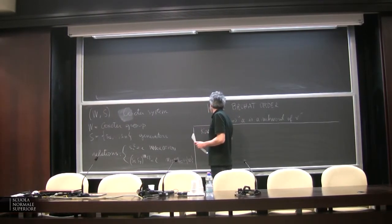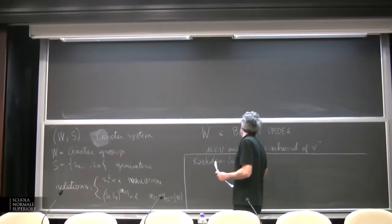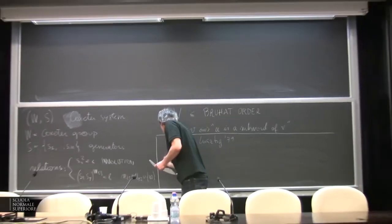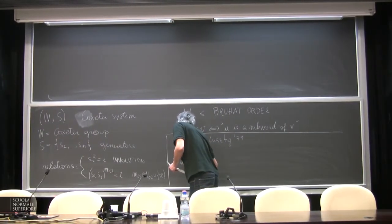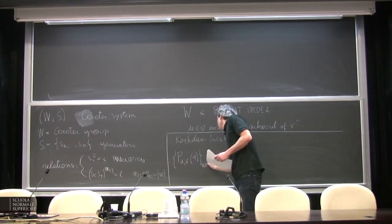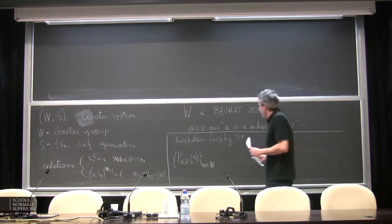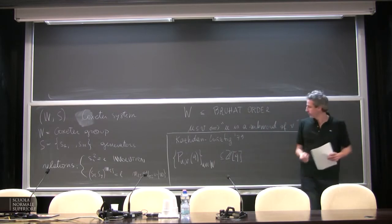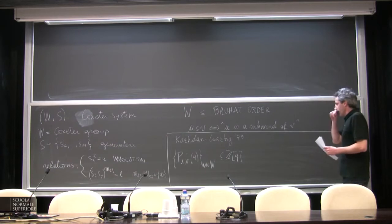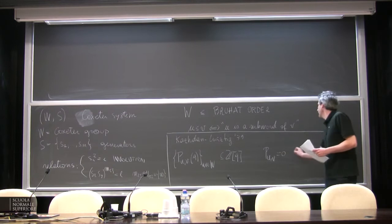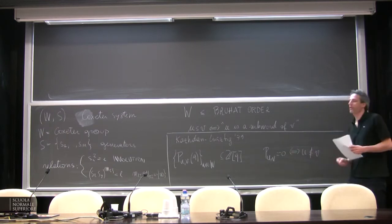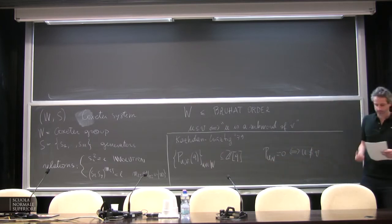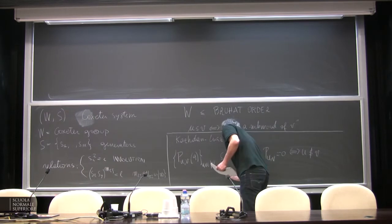In 1979, Kazhdan–Lusztig defined the Kazhdan–Lusztig polynomials, indexed by pairs of elements in the Coxeter group, with a priori integer coefficients in one variable. P_uv is equal to 0 if U is not smaller than or equal to V. So we have one polynomial for each interval in the Coxeter group.